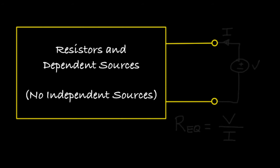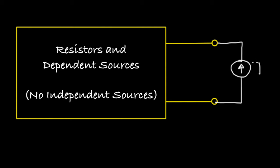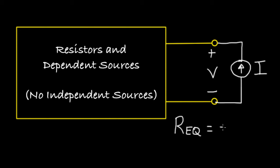As an alternative, we might supply the network with a known current. So instead of connecting a voltage source, we'll connect a current source with some known current I, and then measure the voltage that appears across the terminals. Again, the equivalent resistance for this network would be the ratio of the voltage that appears to the current that we've provided.